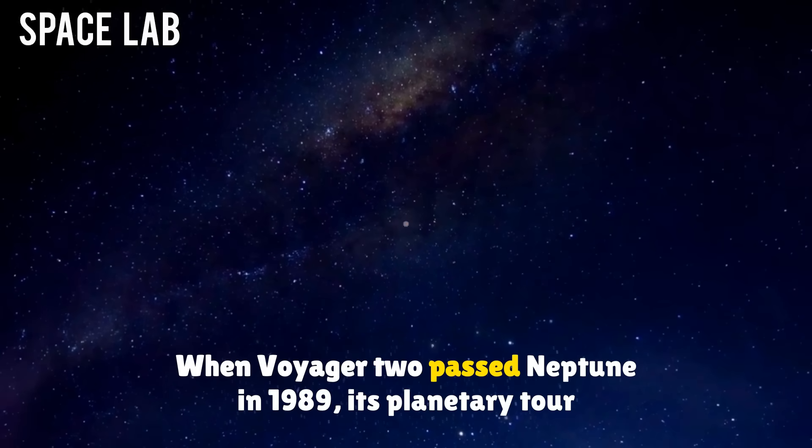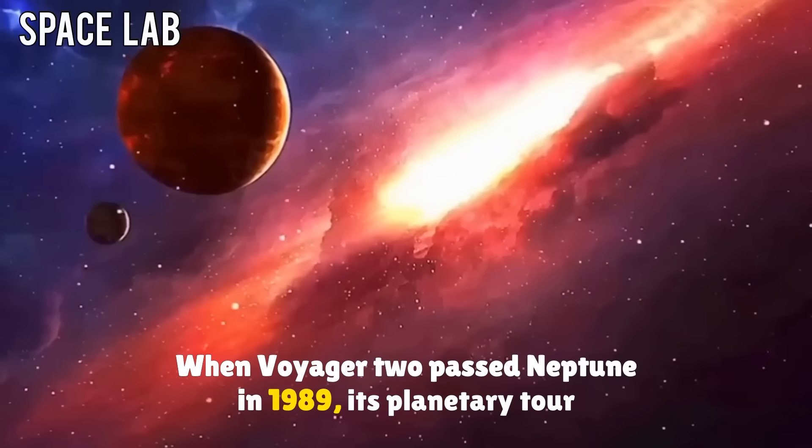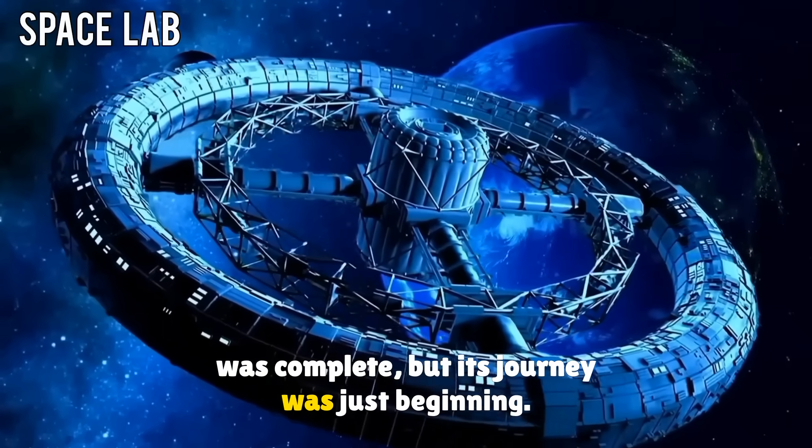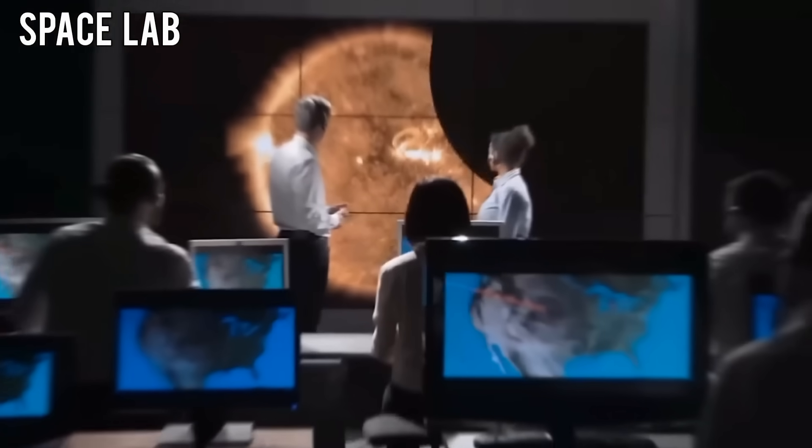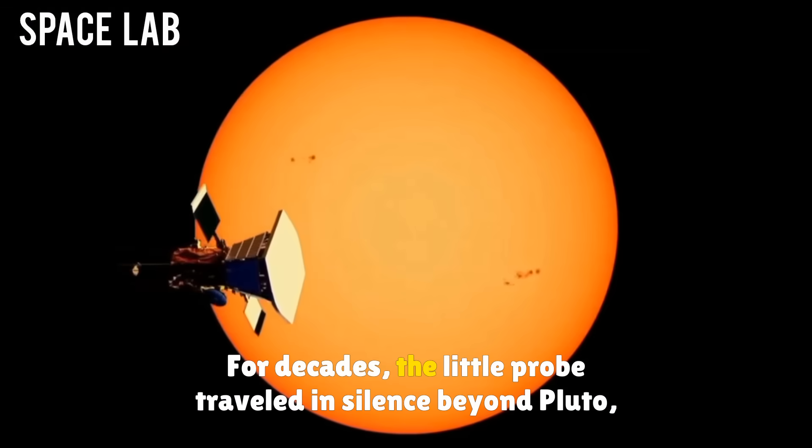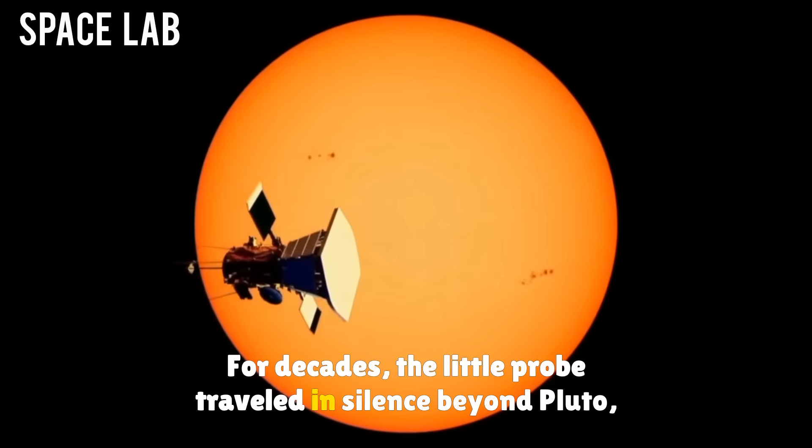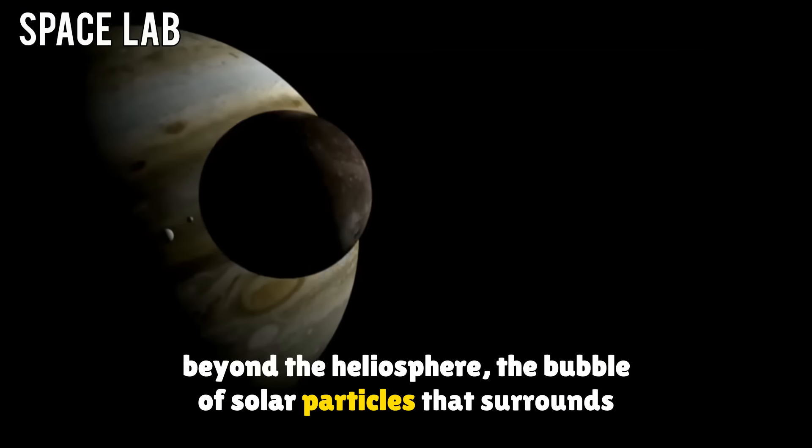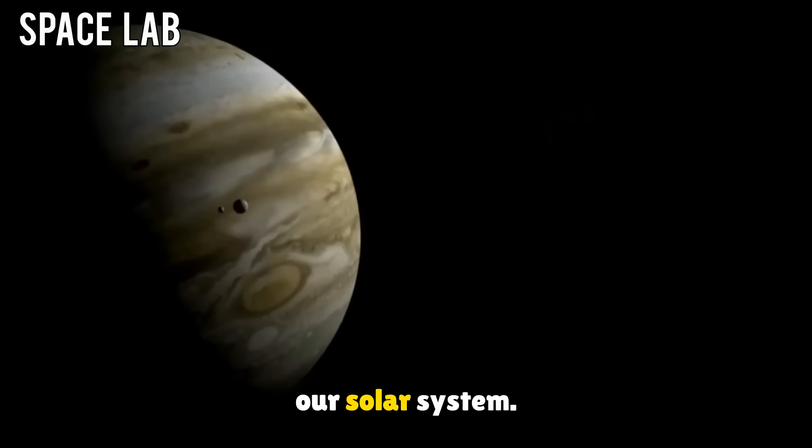When Voyager 2 passed Neptune in 1989, its planetary tour was complete. But its journey was just beginning. For decades, the little probe traveled in silence, beyond Pluto, beyond the heliosphere, the bubble of solar particles that surrounds our solar system.